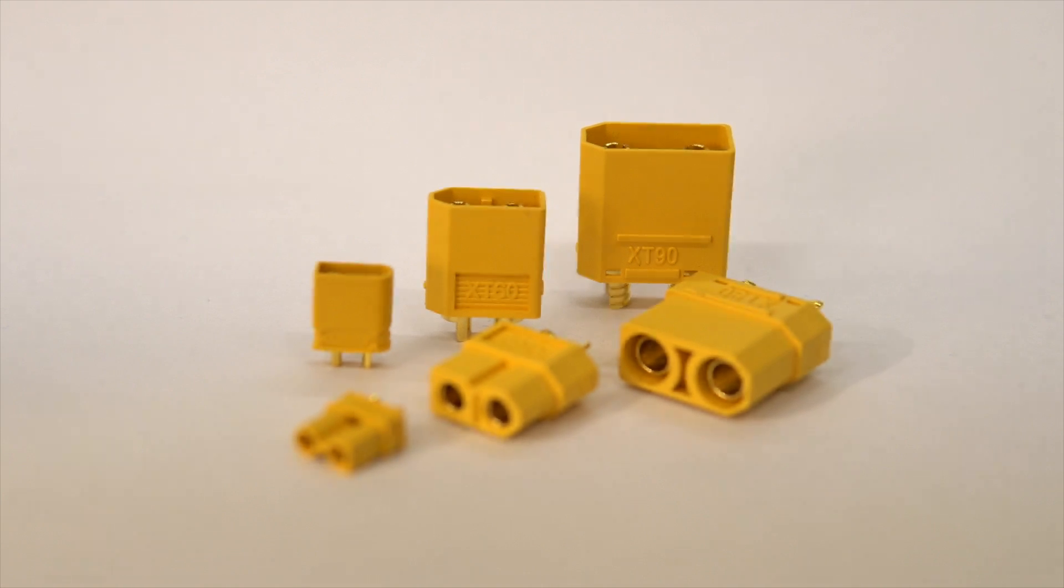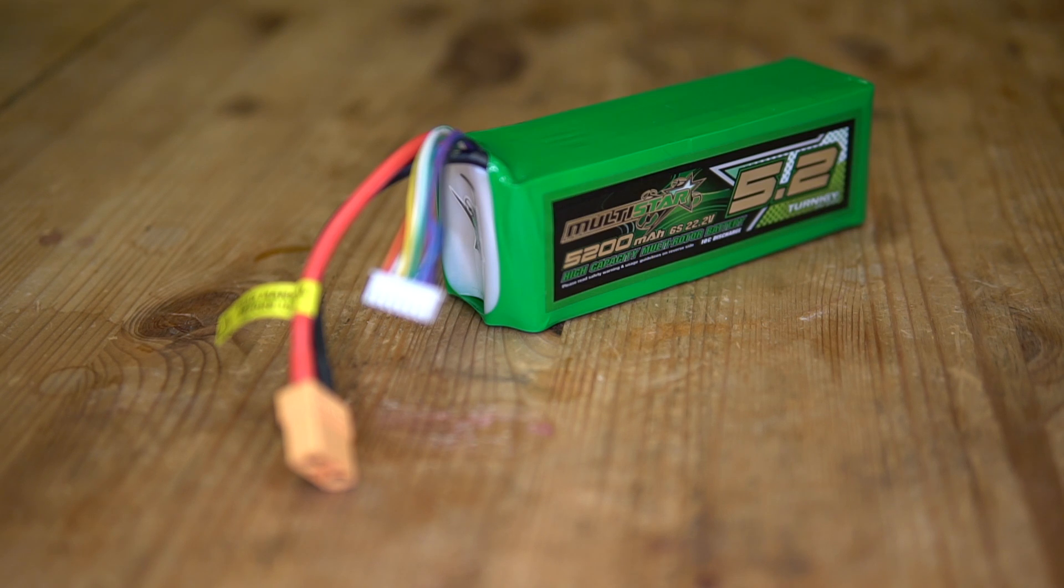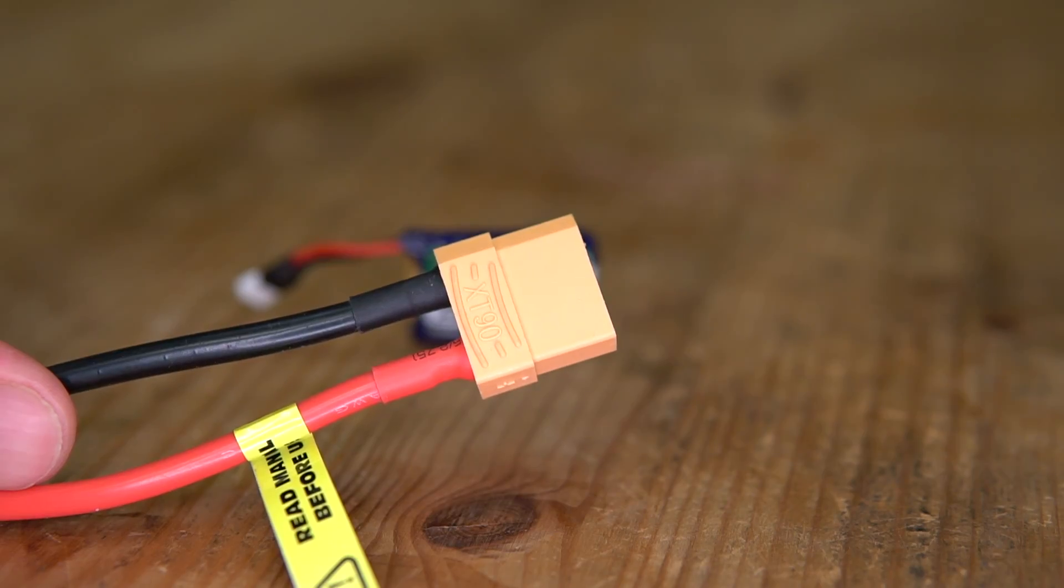The XT90 connector is the big brother in the XT connector family, and it is designed to handle extremely high currents. It is not very common in the freestyle and racing side of the hobby scene, as its bulky size makes it unsuitable for mini drones.